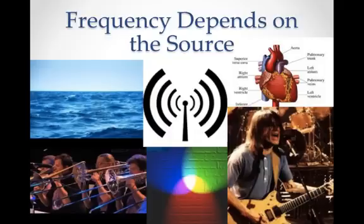Frequency depends on the source. Wind out at sea creates water waves. The different lengths of air columns and horns create different frequencies. Different frequencies of light give off different colors. There are different radio frequencies, different frequencies from different lengths of string with a guitar, different frequencies that are modulated with our vocal chords, and of course, different frequencies of heartbeats. All of these waves have frequencies that are generated by their various sources.